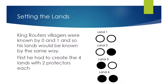King Router's realms were known by 0 and 1, and so his lands would be identified the same way. First he had to create four lands with two protectors each. Land 1 was known as 00, land 2 as 01, land 3 as 10, and land 4 as 11.